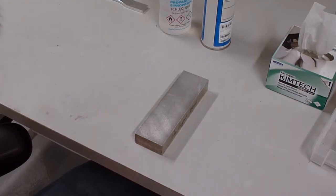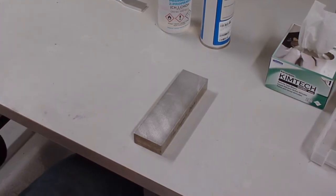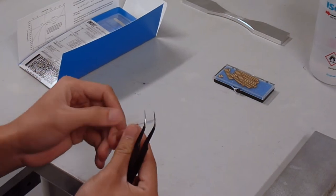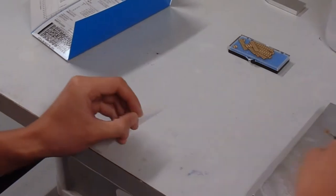Once cleaned, refrain from contaminating the surface with skin contact. Using tweezers, remove the strain gauge from its envelope and set it on the layout block.